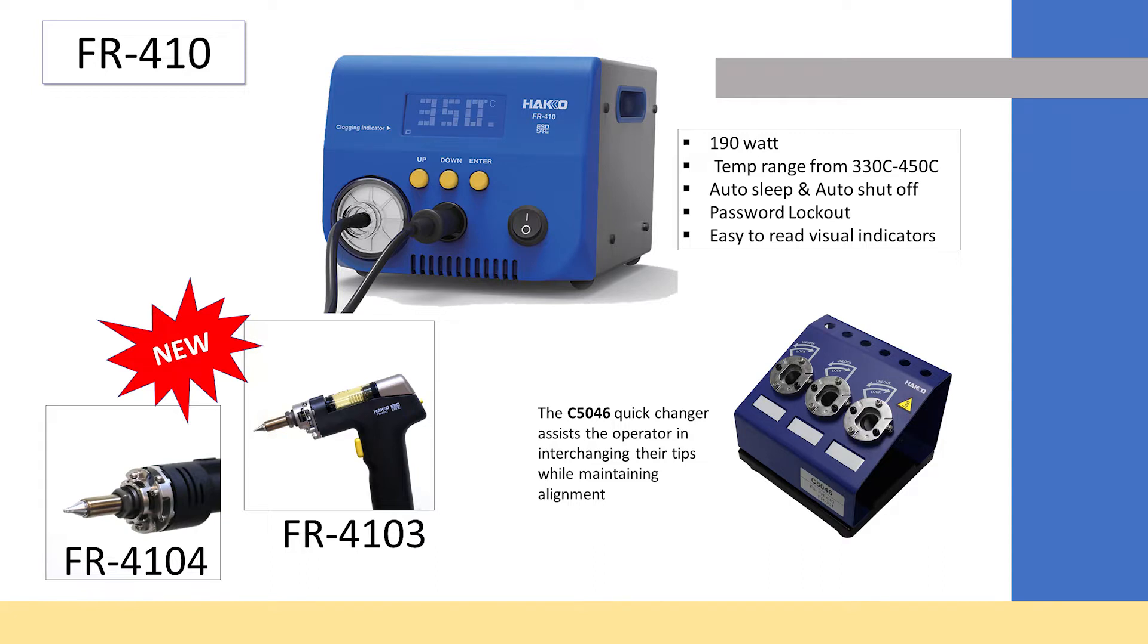I think there's like 17 different nozzle selections available for the N61 type. It has standard features like the auto sleep function, the auto shutoff function. You can adjust the times for both. It also has password lockout and three different preset temperatures that you can set on the actual station, which allow for quick and easy temperature interchangeability.